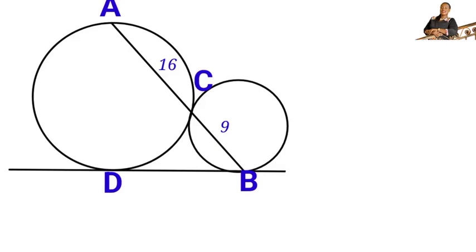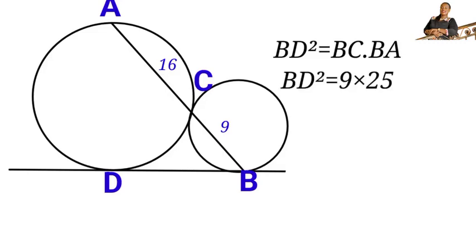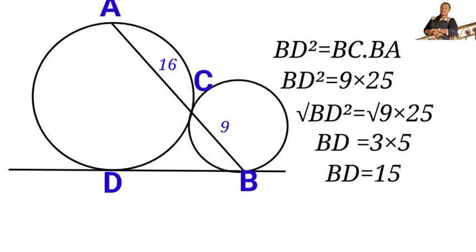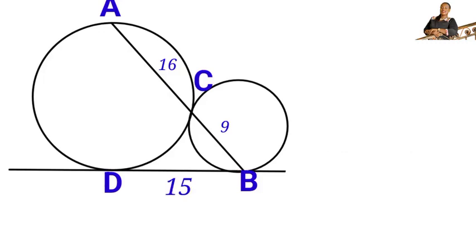To find the length of line DB, we will use the tangent-secant theorem, which says that if DB is tangent to the larger circle at D and BA is a secant line intersecting the circle at point C, then DB squared equals BC times BA. So BD² = 9 × 25 = 225. Taking the square root, BD equals 3 times 5, which is 15.